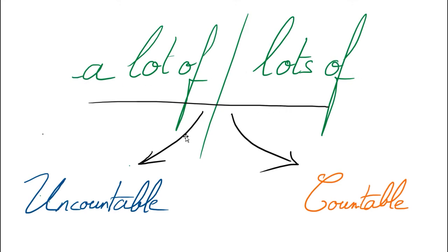As you can see, you can use A LOT OF and LOTS OF with both uncountable and countable nouns. Donc, pour ces deux mots, vous pouvez les utiliser que ce soit avec des noms indénombrables ou dénombrables — y'a pas de problème.